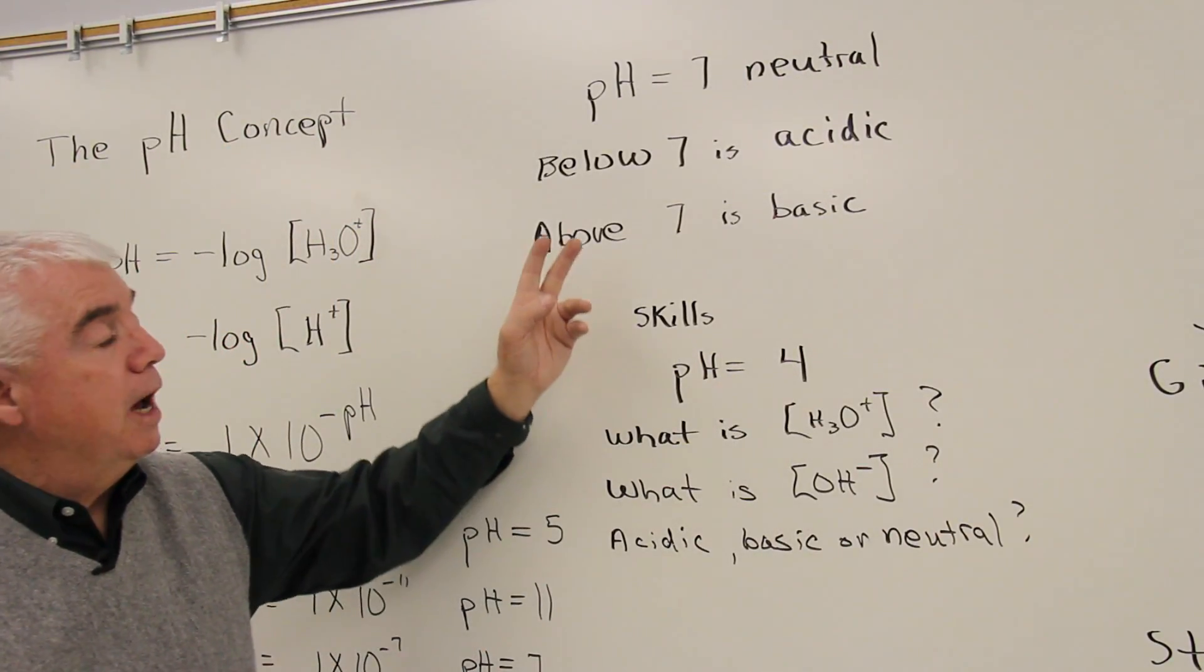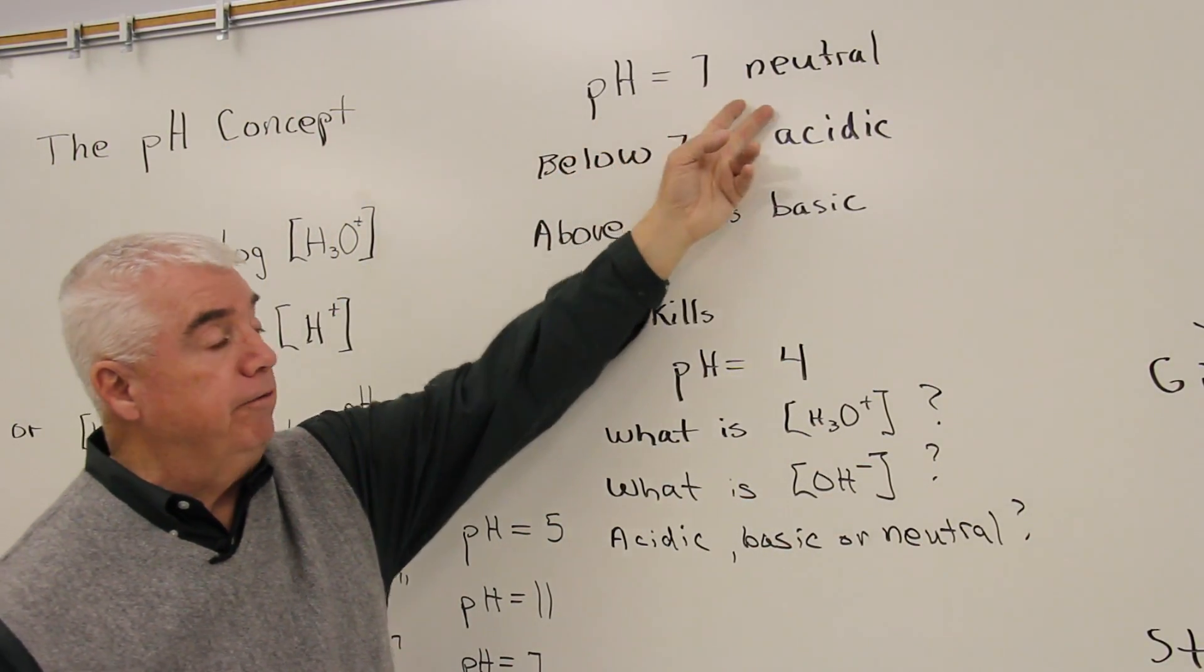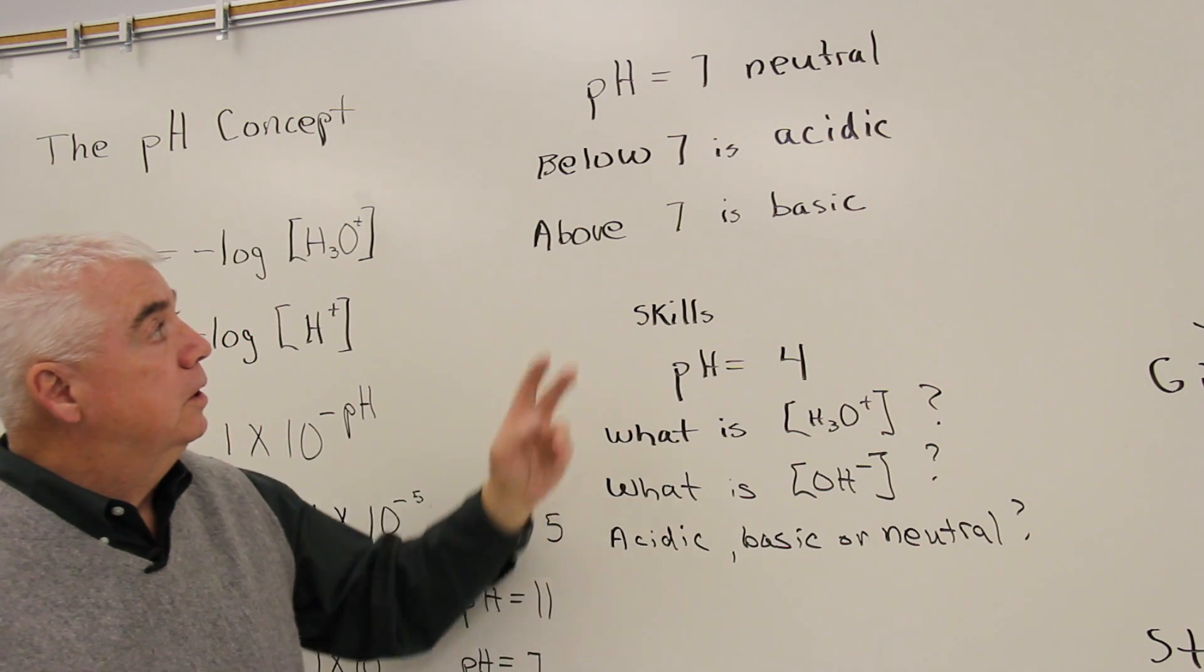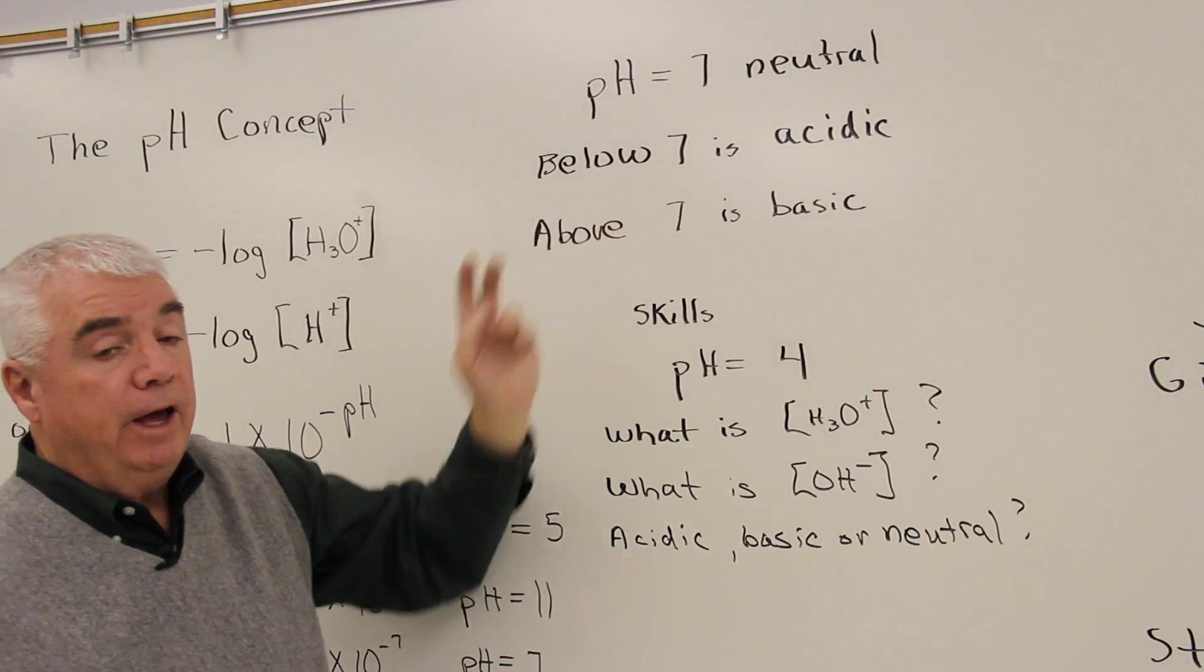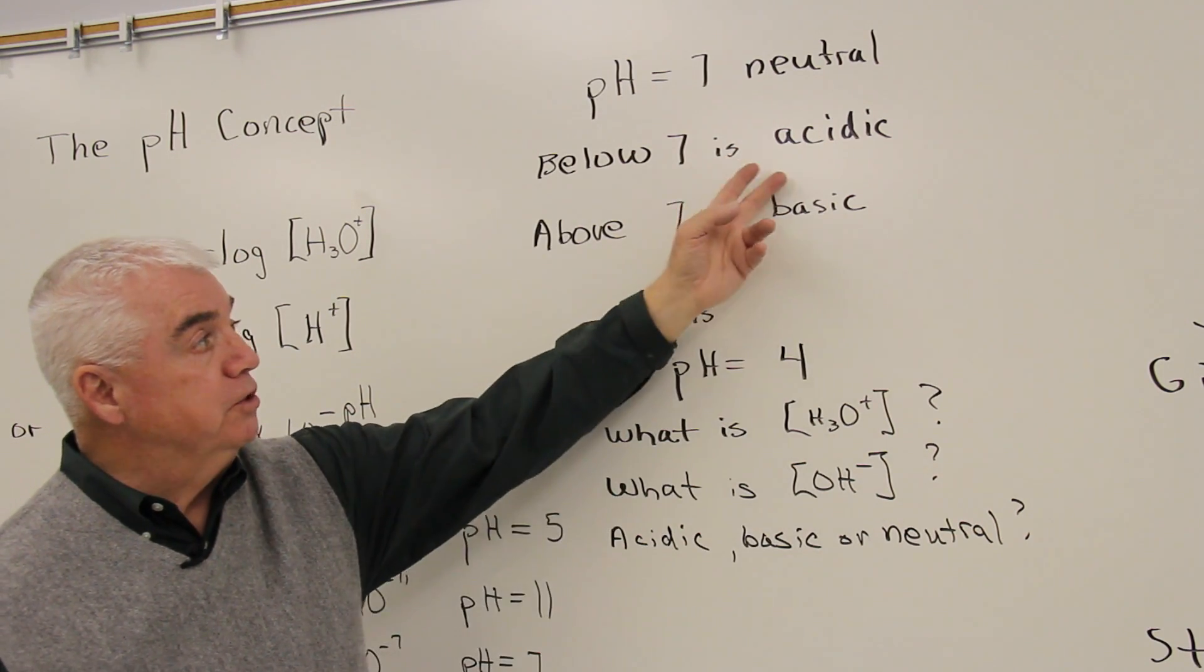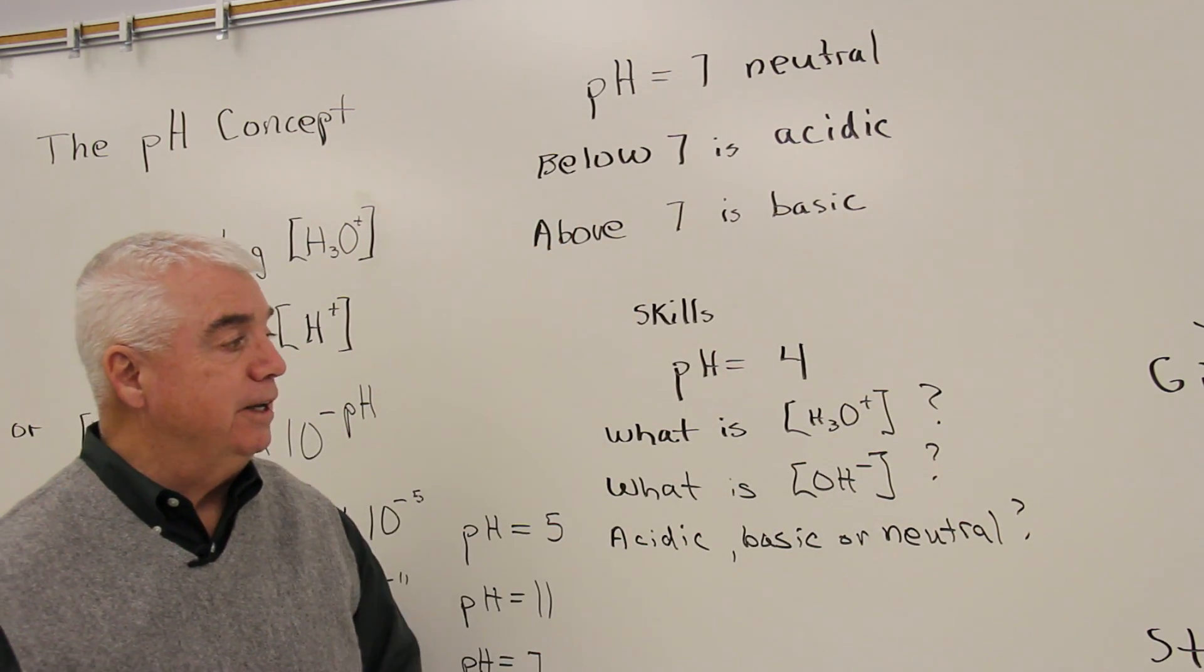As we look at the top of this board, a pH of 7 is a neutral condition or solution. If we have a pH that's below 7, it's acidic. Above 7 is basic.